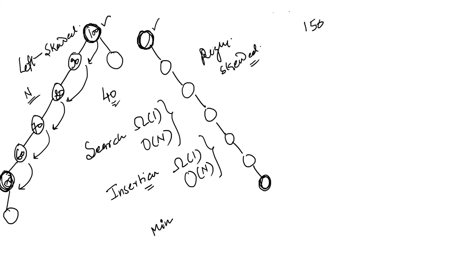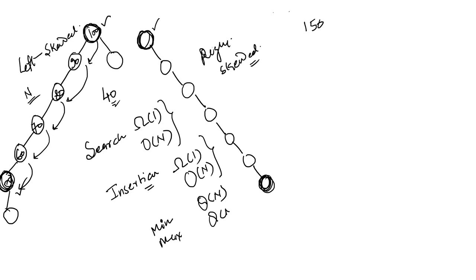Finding the minimum from a left-skewed binary tree requires O(n) time because the leftmost data item is found only after traversing all nodes towards the left. Similarly, finding the maximum in a right-skewed tree also requires O(n) time because the maximum item is at the extreme right, requiring traversal of all n nodes.